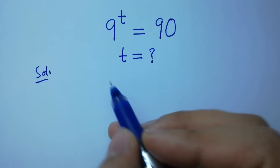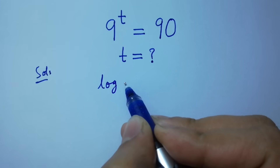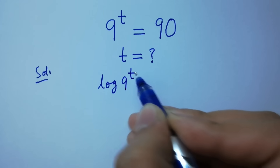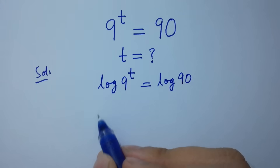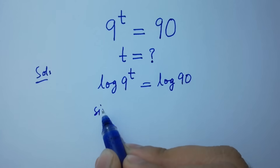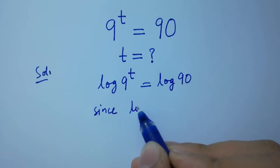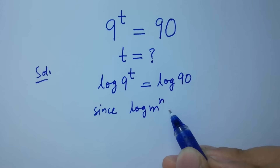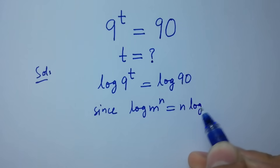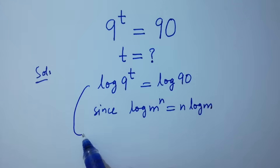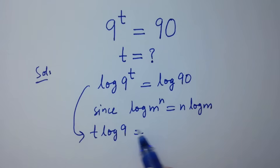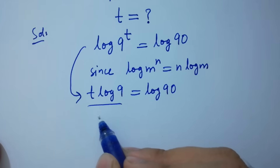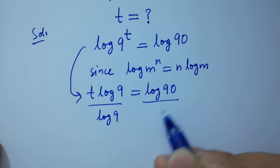Take log on both sides. Log 9 to the power t equals log 90. Since log m to the power n equals n log m, then it will be t log 9 equals log 90. Divide by log 9 on both sides.